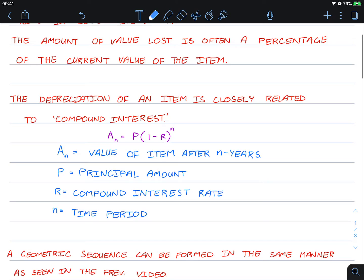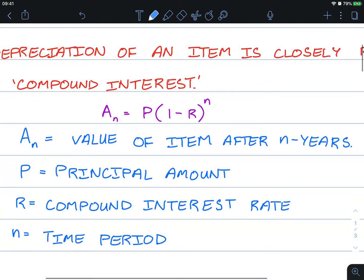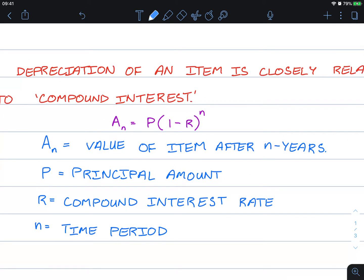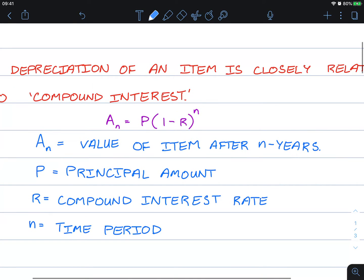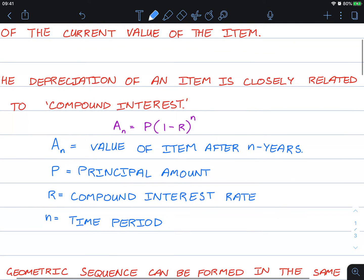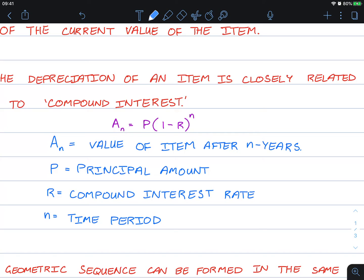The depreciation of an item is closely related to compound interest. It's given as A_n equals P bracket 1 minus r to the power of n. A_n is the value of the item after n years. P is the principal amount, the original value of the item. r is the compound interest rate and n is the time period.